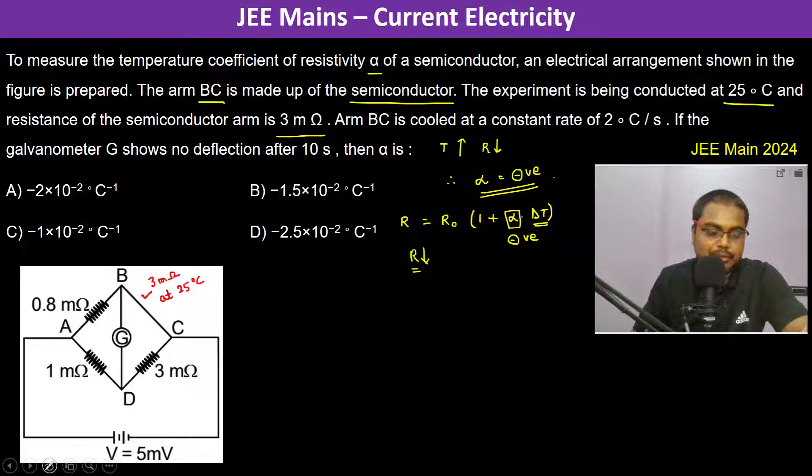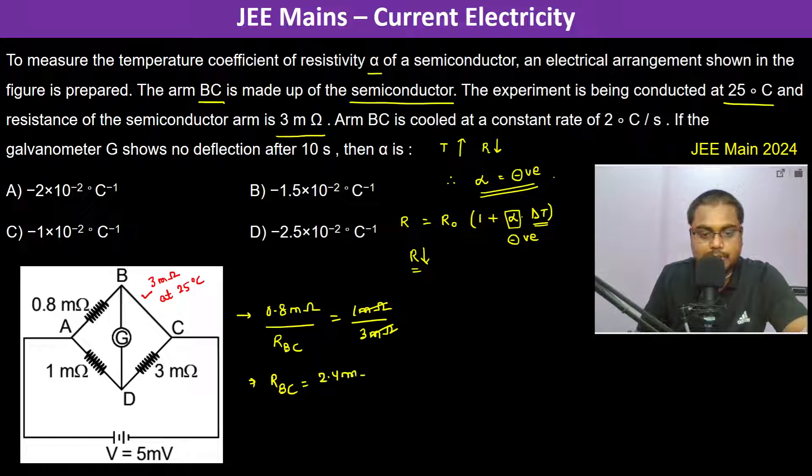For the galvanometer to show no deflection, we should understand the Wheatstone bridge concept. Therefore, 0.8 million divided by the resistance in BC will be equal to 1 million divided by 3 million. So therefore, resistance in BC will be equal to 2.4 million for galvanometer to show no deflection.